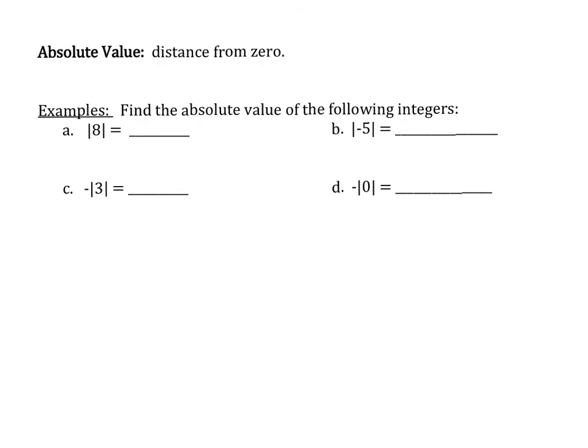The last topic we want to talk about in this section is called absolute value. The absolute value of a number is its distance from 0. The symbol we use for absolute value is double bars, with the number inside. For example, the absolute value of 8 — since 8 is 8 units from 0, the absolute value of 8 equals 8. For the absolute value of negative 5 — negative 5 is 5 units from 0, so the answer is 5.